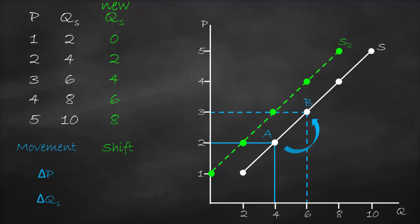Therefore, when will we have a shift? When we have any other factor that changes except the price of this good — which we call a non-price factor. This means that we will have an entirely new supply curve, which means we have a change in supply. To summarize: a movement means that we move from one point to another on the same supply curve — this happens when we change the price, and it changes our quantity supplied. A shift means that we have a new curve — this happens if we change any other factor except the price of the good, which is why we call it a non-price factor, and this results in a change in supply.